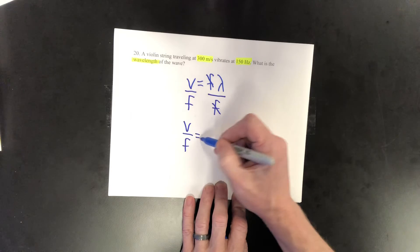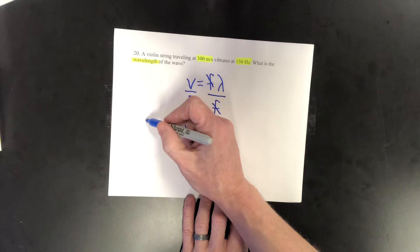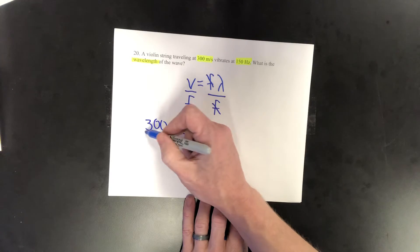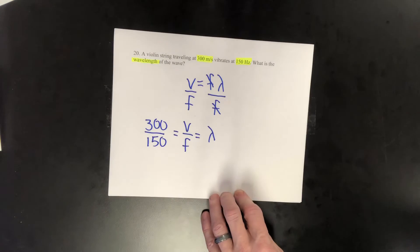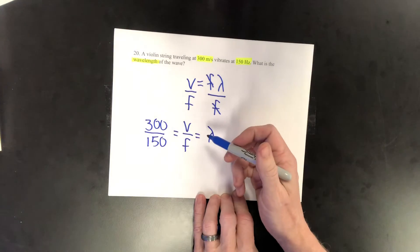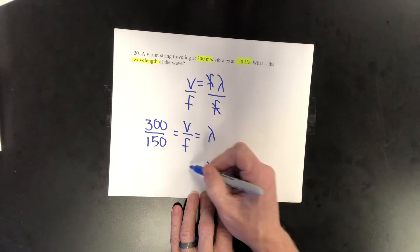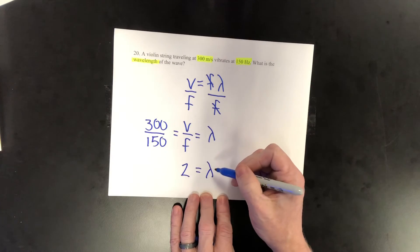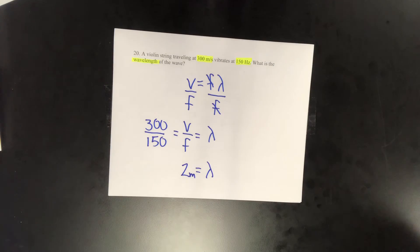When I plug in my speed of 300 and my frequency of 150, I get my wavelength of two. And the units are meters, so my wavelength is two meters.